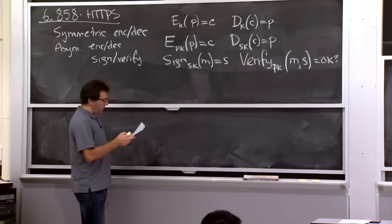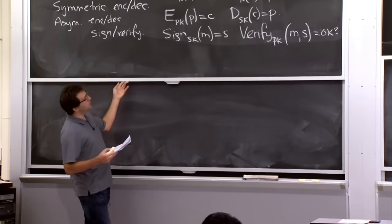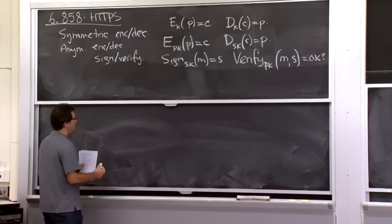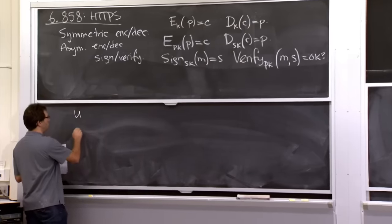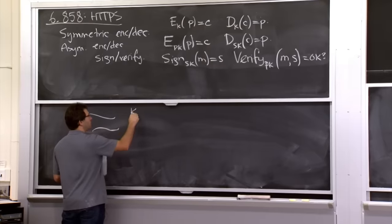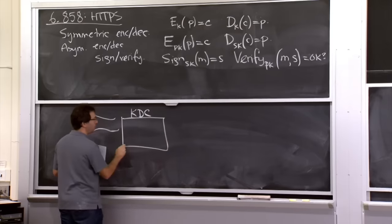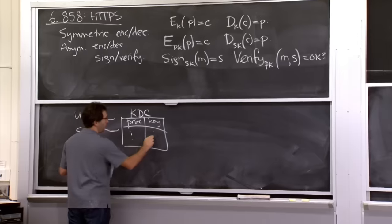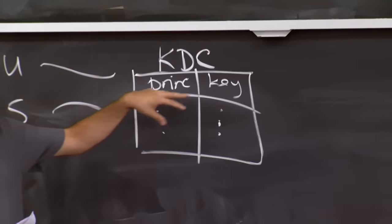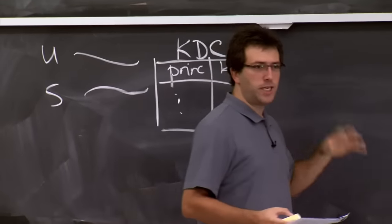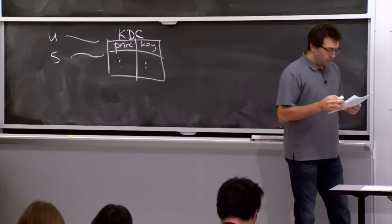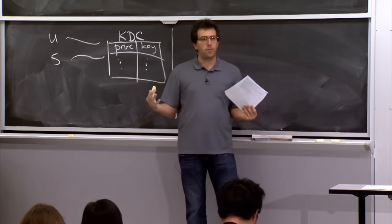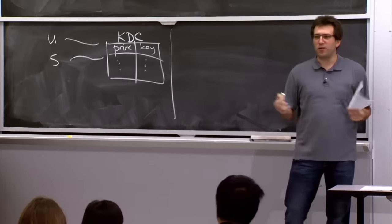So how would we protect network communication at a larger scale than Kerberos? In Kerberos, all users and servers have a relation with the KDC entity, which has a giant table of principals and their keys. Whenever a user wants to talk to a server, they ask the KDC to generate a ticket based on this table. Why is Kerberos not enough for the web?